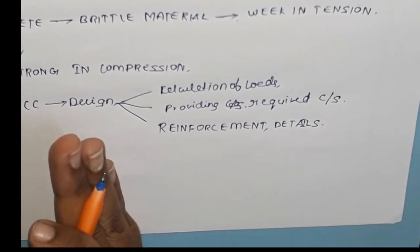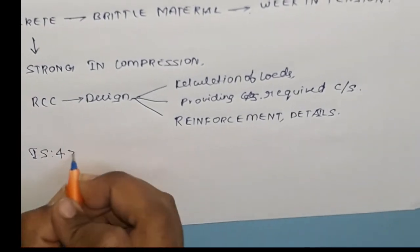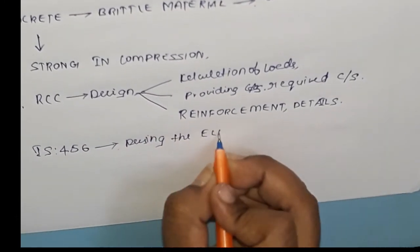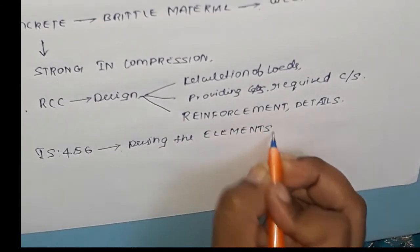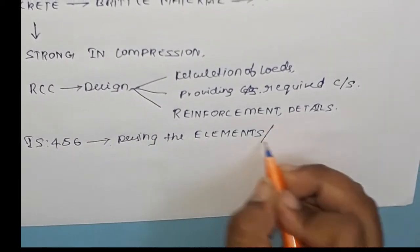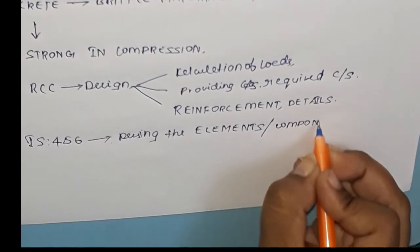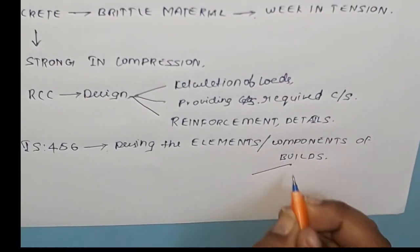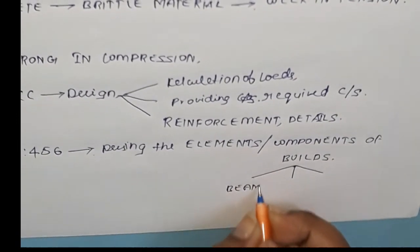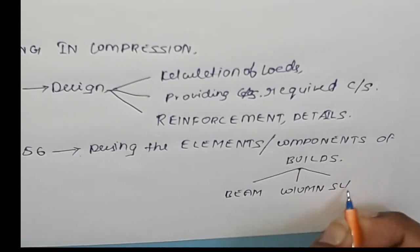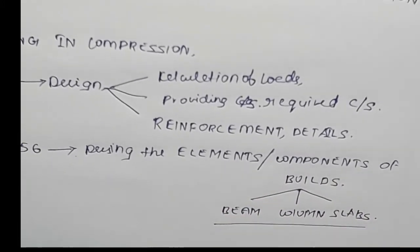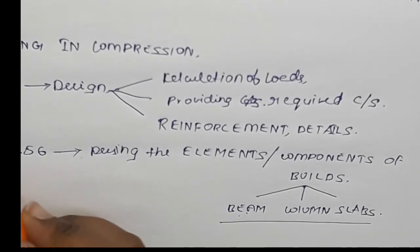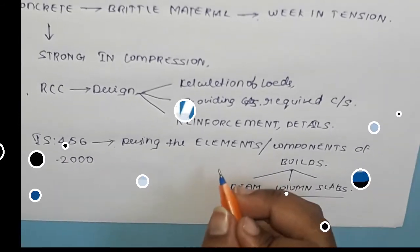For designing all these sections — beam, column, slab, etc., which are the basic components required for the construction of a building — we are going to follow a certain code. That code is IS-456-2000. Using IS-456-2000, we are going to design any structure.